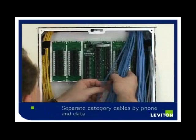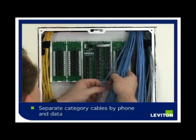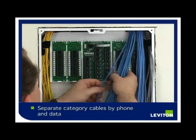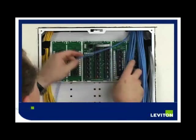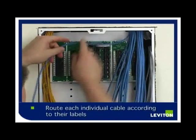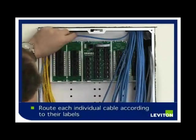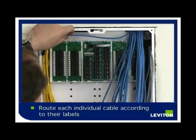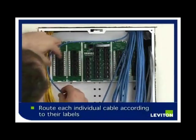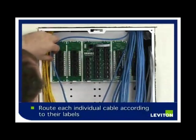Separate your Category 5e cables by phone and data. In this case, because we have 24 cables, we are going to separate them into groups of 12. This separation allows us to then route each cable individually, making sure we know which cable we are dealing with by its label.